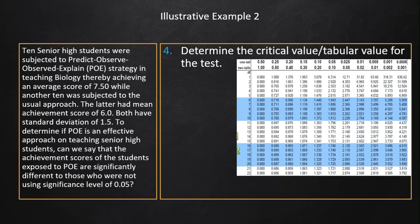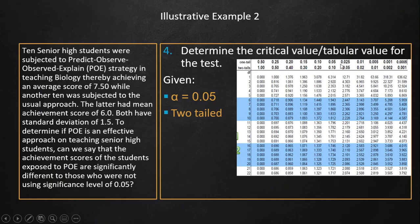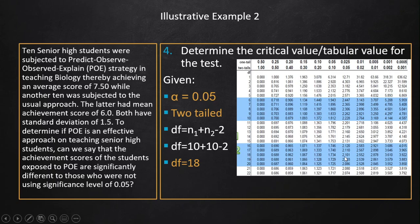Step 4: Determine the critical value. With alpha = 0.05 and a two-tailed test, the degree of freedom is n₁ + n₂ − 2 = 10 + 10 − 2 = 18. Looking up df = 18 at the 0.05 two-tailed column, the tabular value is 2.101.